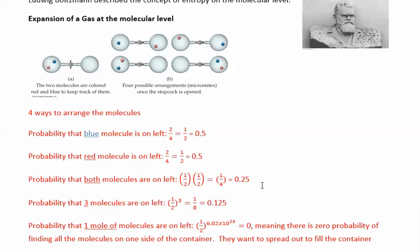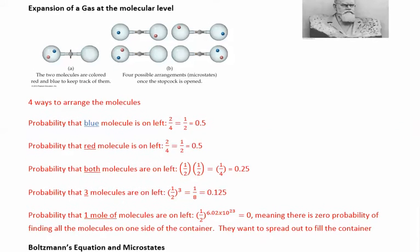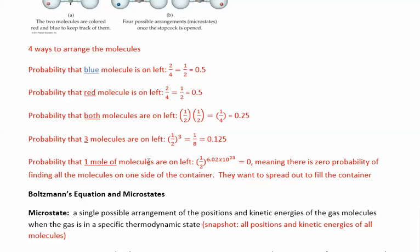Instead of drawing all these pictures, we can extend this further. With three molecules, we multiply the probabilities: one-half times one-half times one-half, which is one-half cubed, equal to one-eighth, or 0.125 — less than before. Every time you add a molecule, the probability that they'll all be on the same side decreases significantly. If we had one mole of molecules — that's 6.02 × 10²³ — raising one-half to that power gives essentially zero probability.